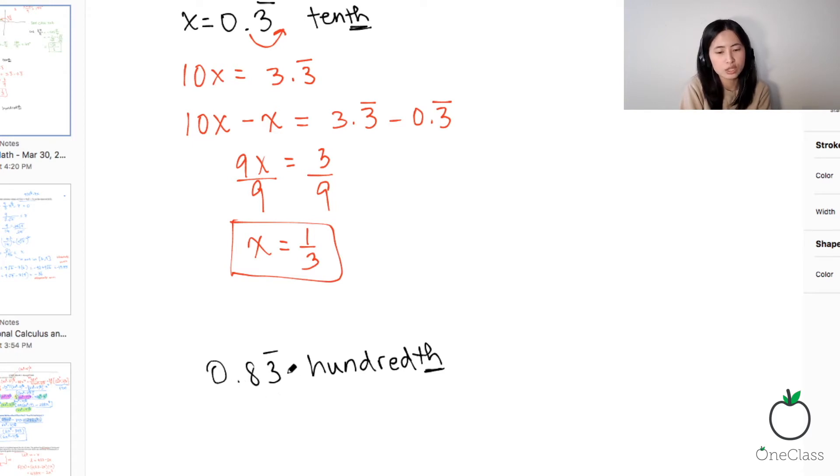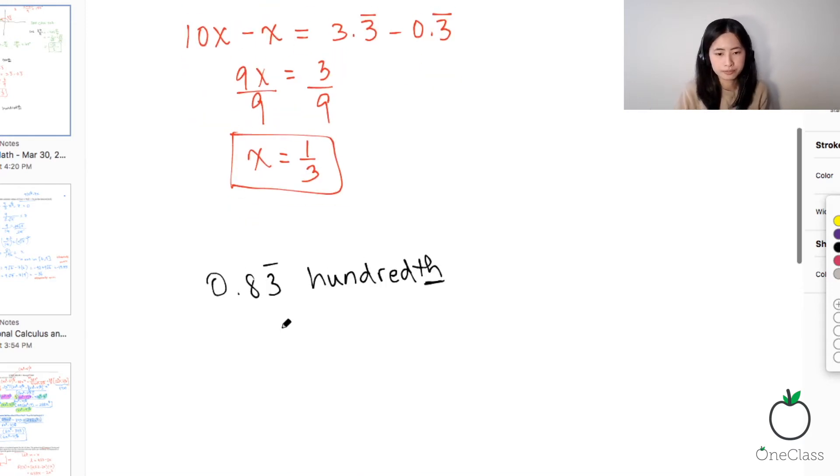Therefore, you're going to move this two times. That's why it's 100. So let's do that. So this is 100x, right? Does that make sense? So now that this is 100x, therefore, this is going to be 83.3.